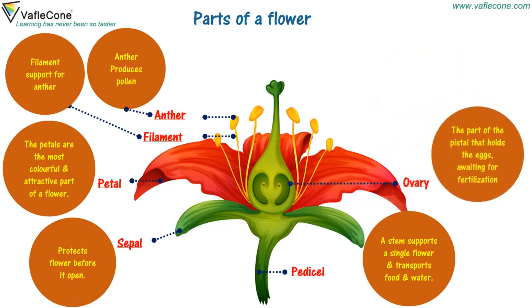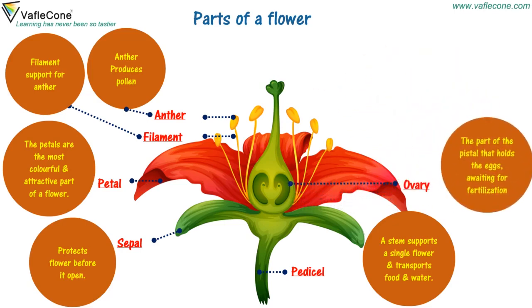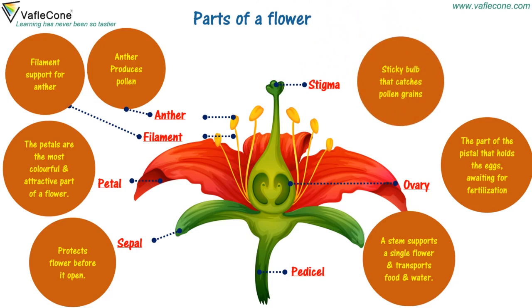The pedicle is a stem that supports a single flower and transports food and water. The ovary is the part of the pistil that holds the eggs awaiting fertilization. The stigma is a sticky bulb that catches pollen grains.